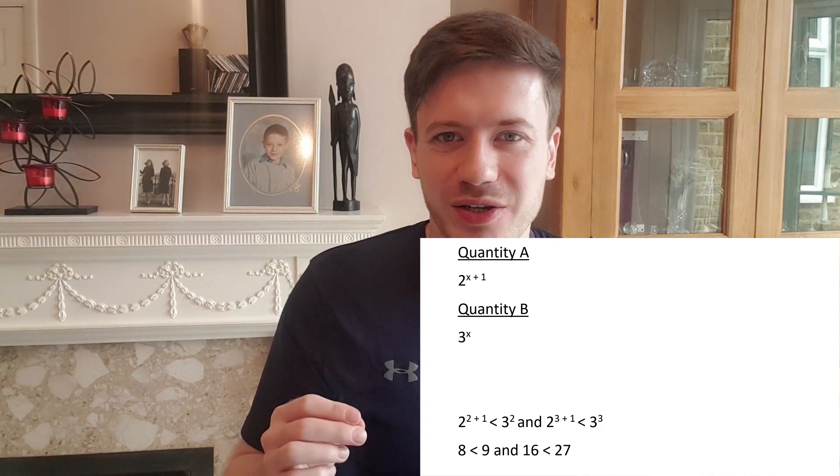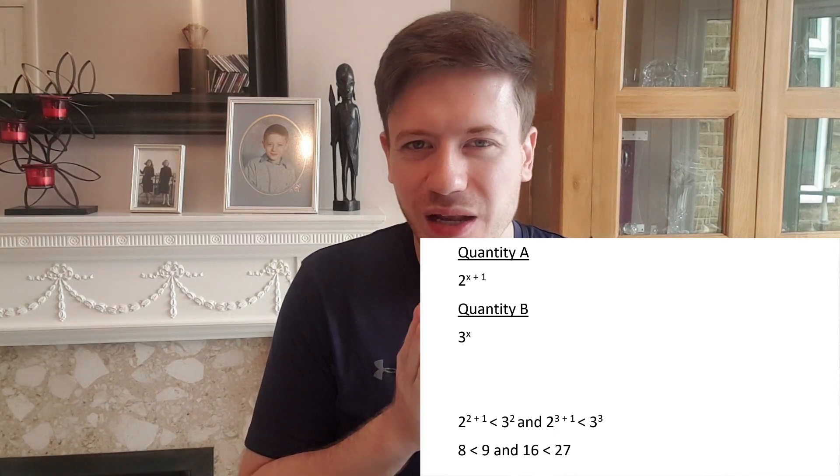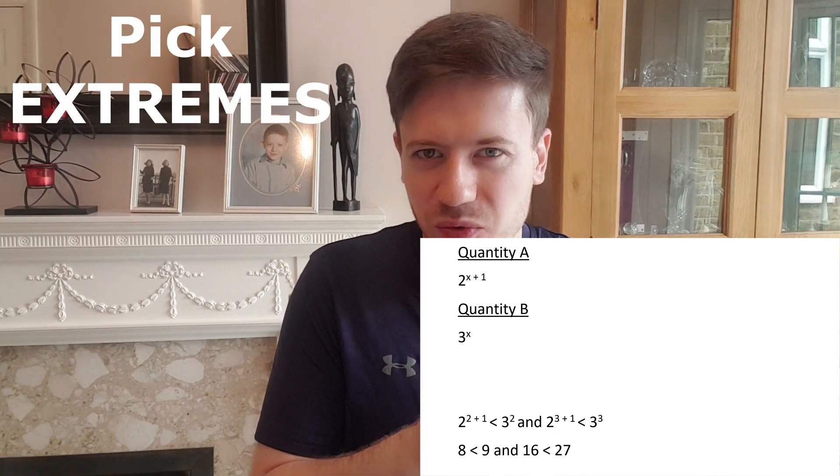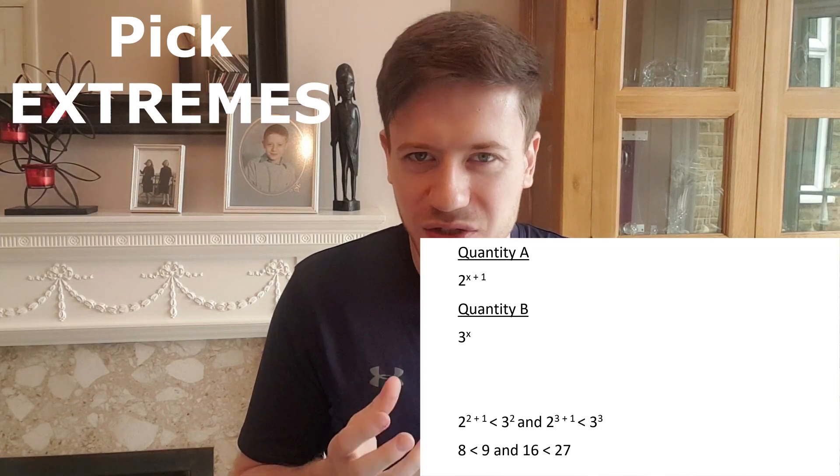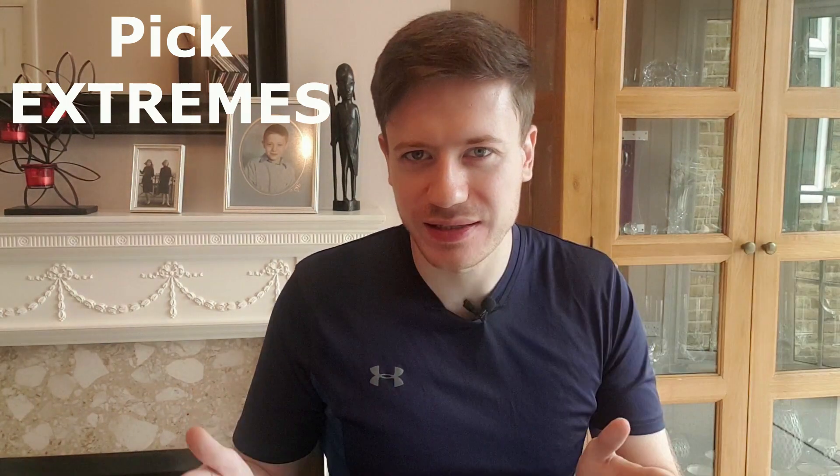So you would probably conclude that quantity B is always bigger right? The problem is our numbers were too close together. We didn't pick the extremes. What would the extremes be? Well the question said that x had to be an integer greater than zero.